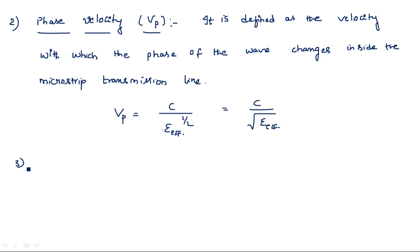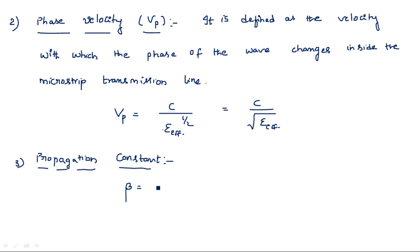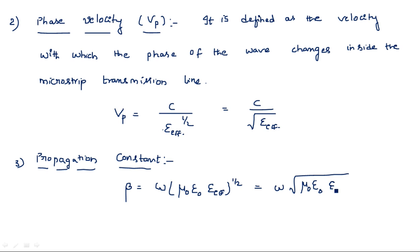The next parameter is propagation constant. Unlike rectangular or circular waveguides where the propagation constant is indicated by gamma, here the propagation constant is indicated by beta. Beta is equal to omega times the square root of mu naught, epsilon naught, and epsilon effective — that is, omega times the square root of free space permeability, free space permittivity, and the dielectric constant.